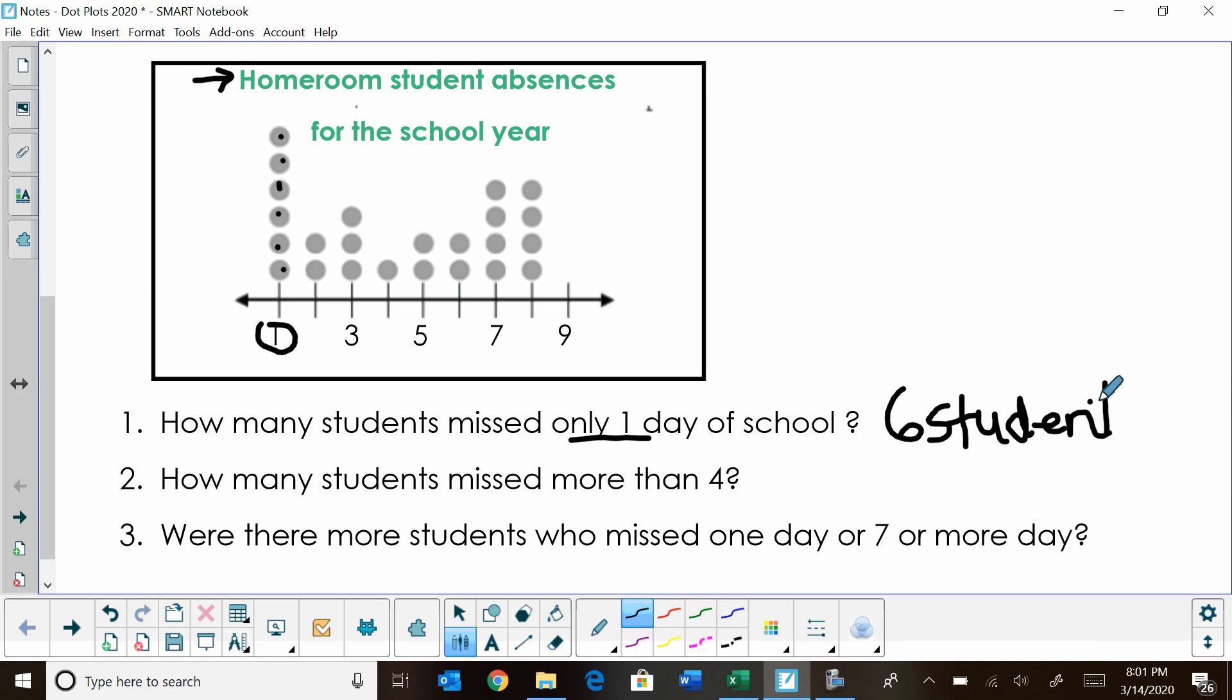Now let's read the second question. How many students miss more than four days? So more than four would mean five, six, seven, eight, nine, anything more than four. So let's look at that data. That would separate our data right here. So how many students miss more than four days? We have one, two, three, four, five, six, seven, eight, nine, ten, eleven, twelve. We have 12 students who have missed more than four days.